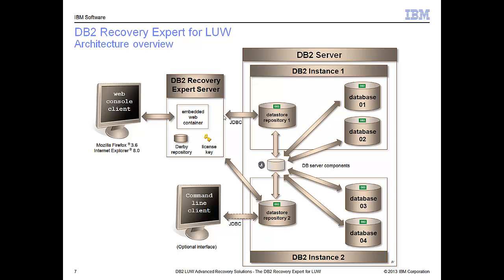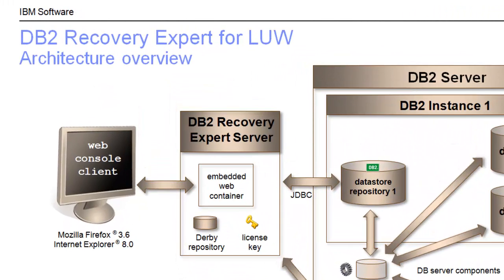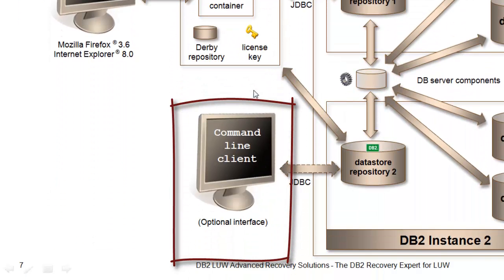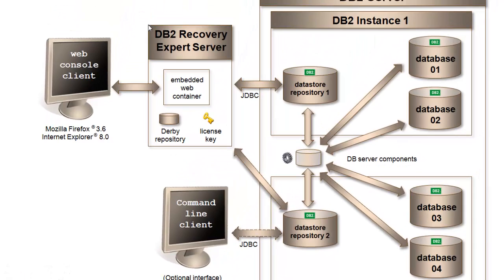Now let's talk about the architecture of Recovery Expert. When you install it, there are two pieces: the Recovery Expert server itself and the command line processor client — these are two separate installs that can be on any server or client, including the same server as the databases being recovered. When you install the Recovery Expert server, an embedded web container and a Derby repository are installed with it. You activate it with a license key, and then use the Recovery Expert UI to do the rest of the configuration.